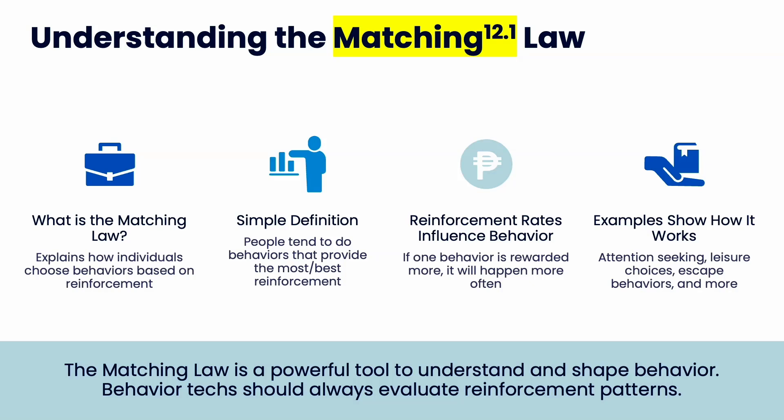What is the matching law? This explains how individuals choose behaviors based on reinforcement. There's a really simple definition — this is the only definition you need to know. I will talk about the formula, but you don't need to know that as much. People tend to do behaviors that provide the most or best reinforcement — the strongest reinforcement, the most magnitude. Reinforcement rates influence behavior, so if one behavior is rewarded more, people choose that behavior.